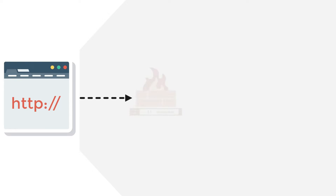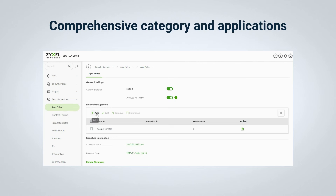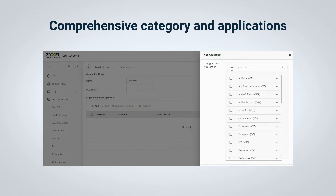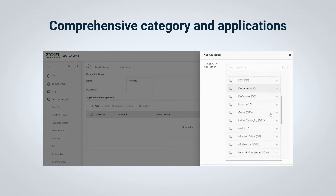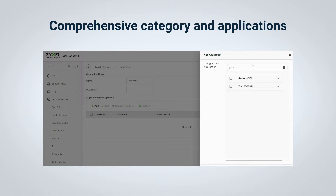Explore advanced security features such as App Patrol. You can use it to monitor and control bandwidth usage on specific applications for optimal network performance. Zyxel App Patrol covers well-known network applications such as social, gaming, productivity, and other web applications. Its database supports over thousands of applications and their behaviors, enabling you to identify various applications.